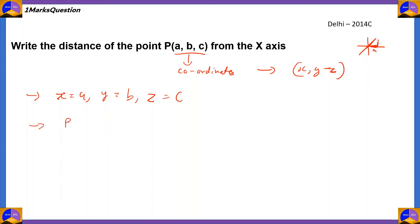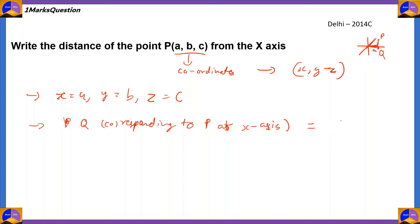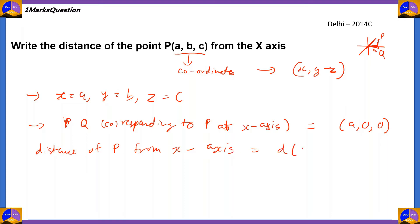The coordinates of a point Q, corresponding to P on the x-axis, will have coordinates (A, 0, 0) because it's found on the x-axis. It's on a straight line. So to find the distance of point P from the x-axis, we'll find the distance of line PQ. Since P has (A, B, C) and Q has (A, 0, 0), we'll use the distance formula.